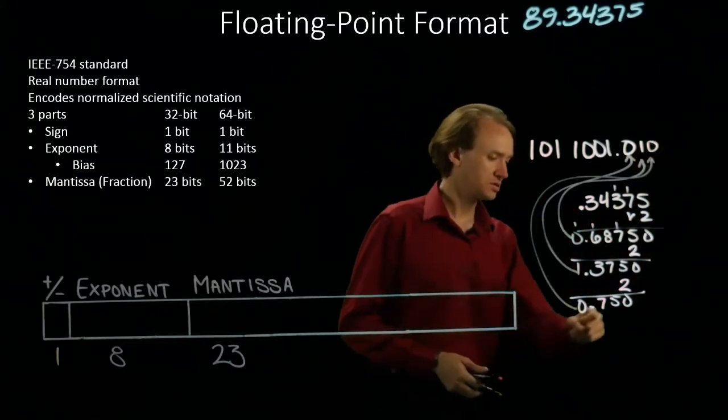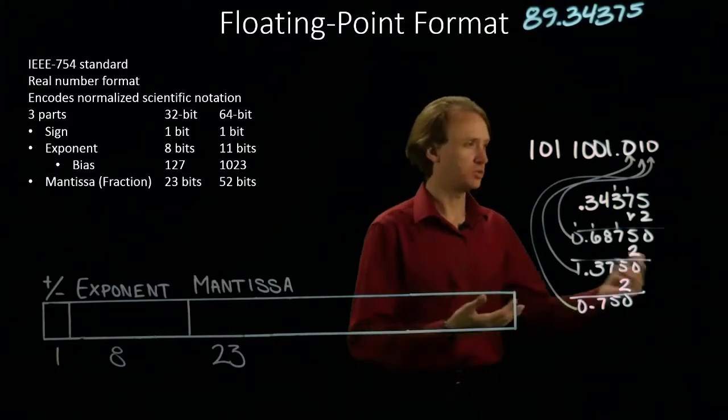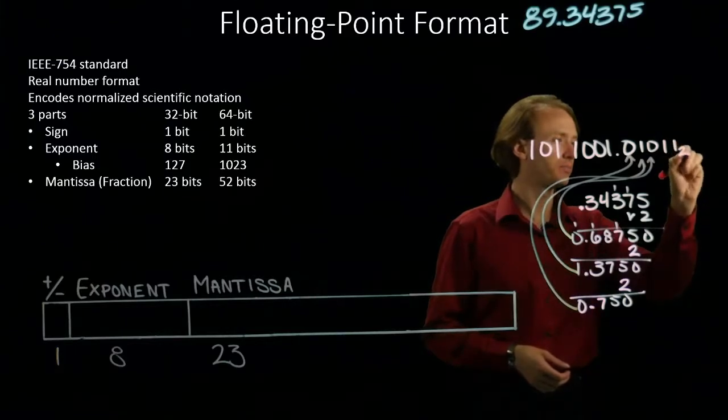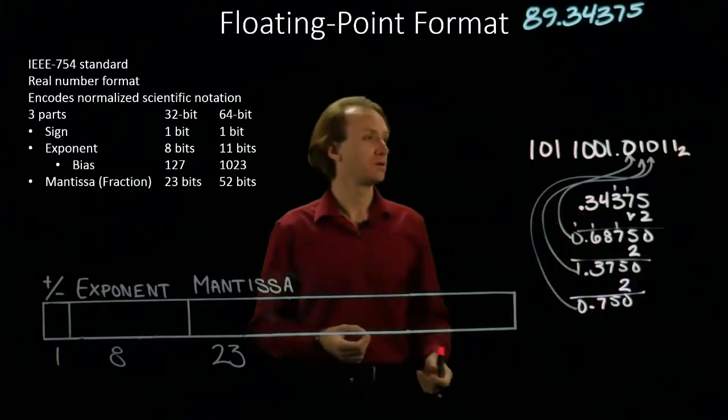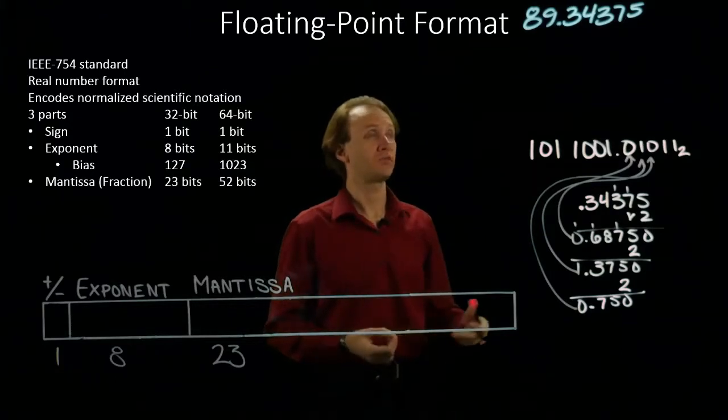And I can see I've got a 0.75. That will just give me two more ones. So, I will just write those two down. And that will be my binary representation of 89.34375.